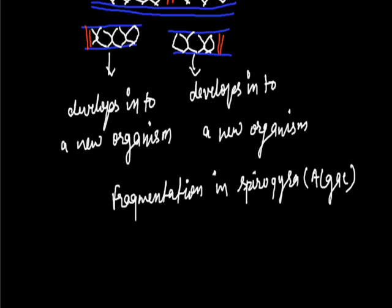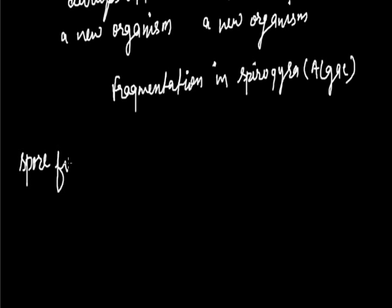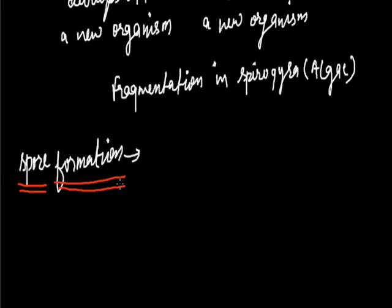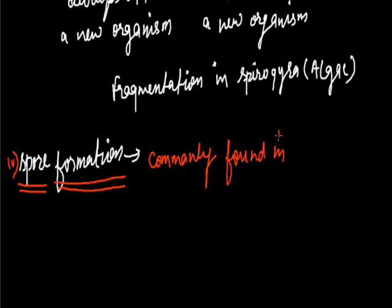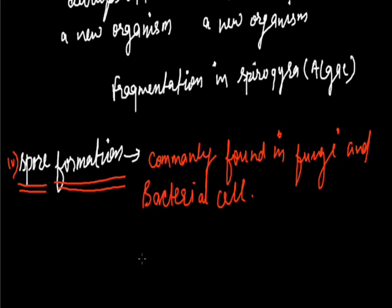The next type of asexual reproduction is spore formation. Spore formation is a type of asexual reproduction which is commonly found in fungi and bacterial cells. A spore is a microscopic cell which contains a nucleus with a small mass of cytoplasm surrounded by a protective coat.